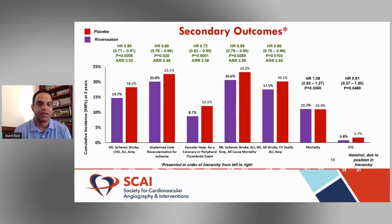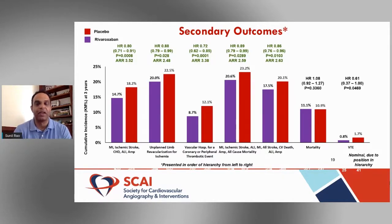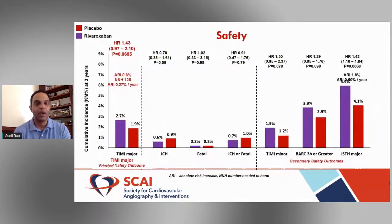All secondary outcomes favored rivaroxaban depending on which combination you examine, including interestingly venous thromboembolism. Even at very low doses, rivaroxaban showed a directional benefit in reducing VTE, though not statistically significant. Regarding safety: adding an anticoagulant on top of background therapy predictably increased bleeding. There was an increase in TIMI major bleeding, though it did not reach statistical significance.